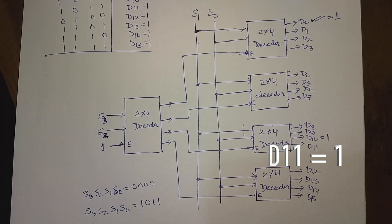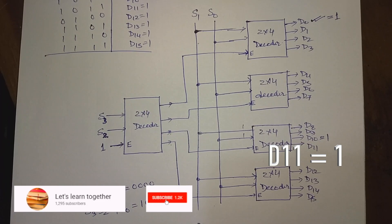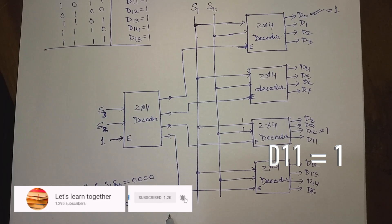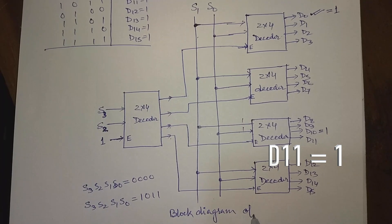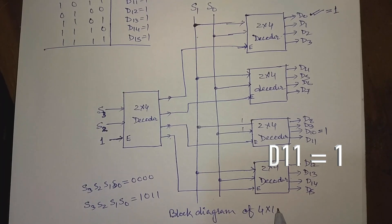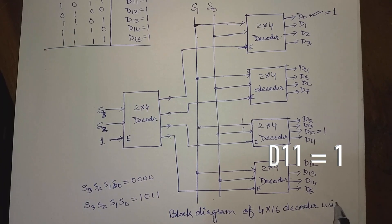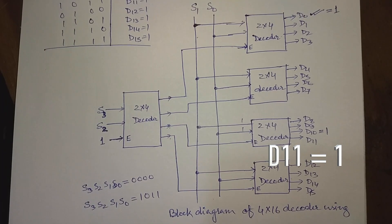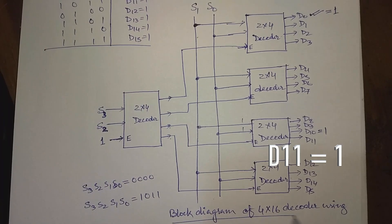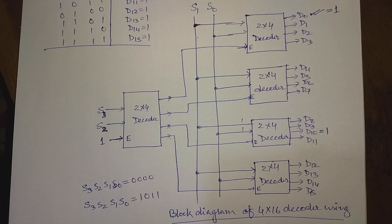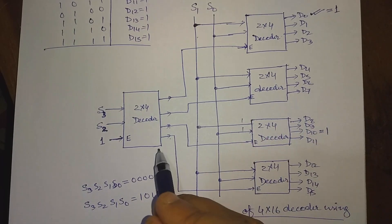So in this way we can understand the operation of this 4x16 decoder. This is the block diagram of a 4x16 decoder using 2x4 decoders. We need 5 numbers of 2x4 decoders in total.